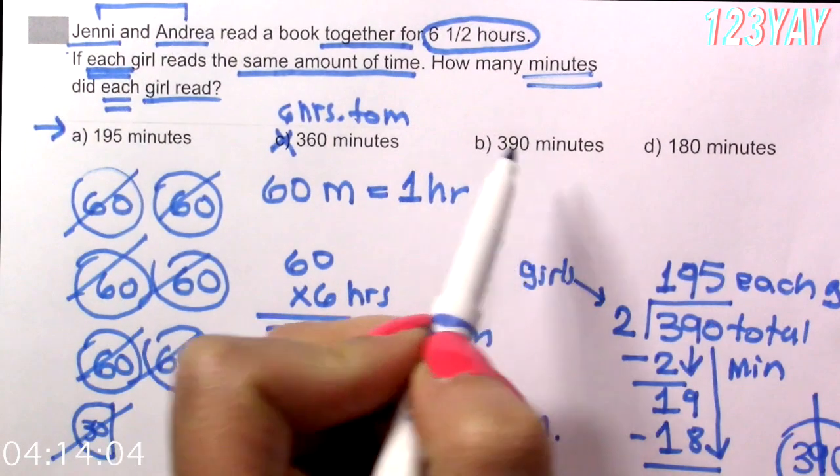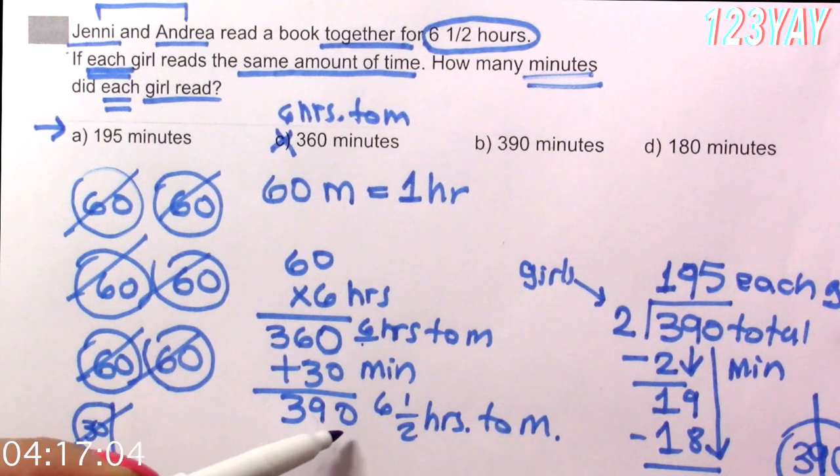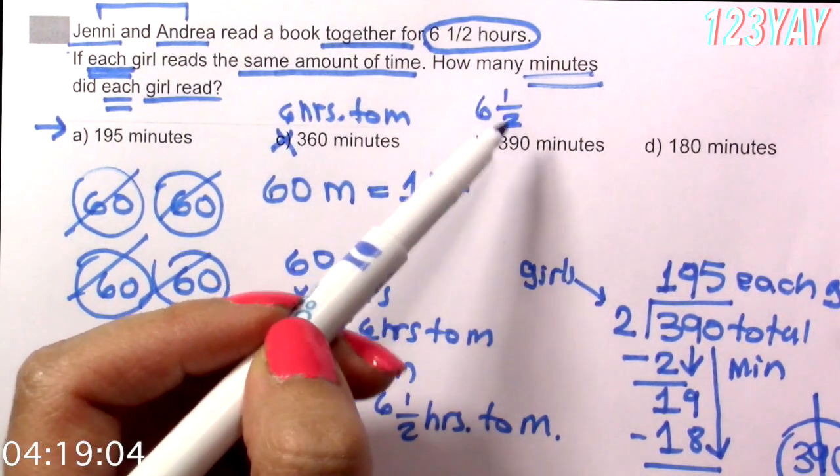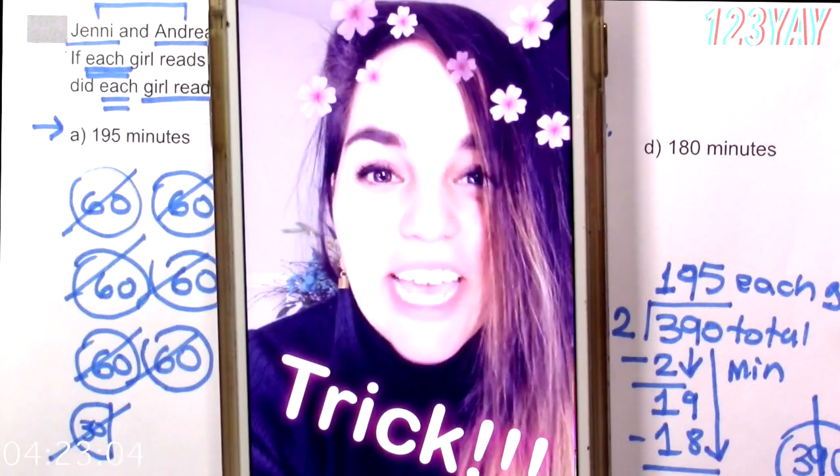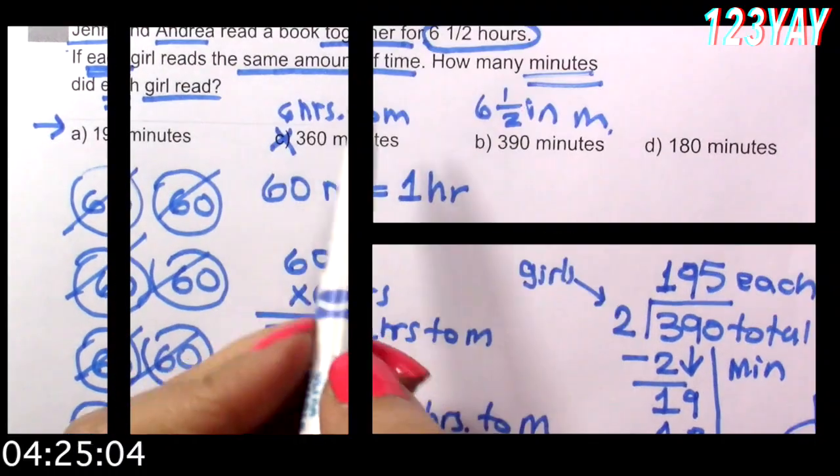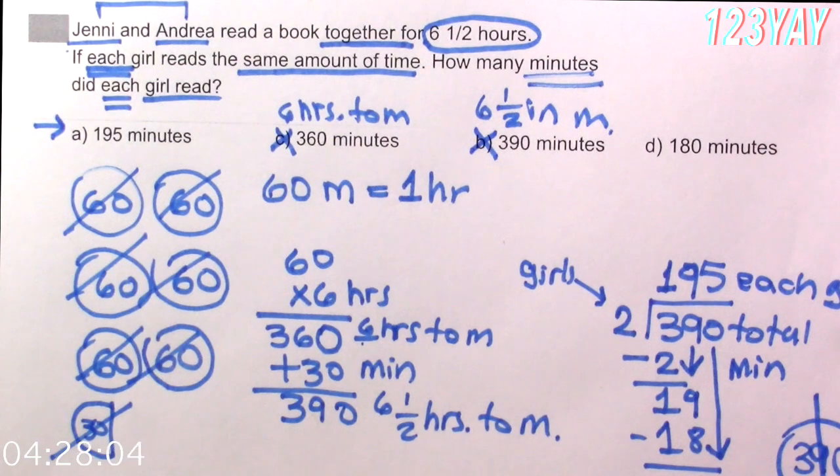What about this? 390 minutes. I see 390 minutes. This is 6 and a half hours in minutes. That's a trick. I'm glad we caught it. They want to trick us guys but we won't let them.